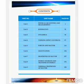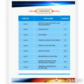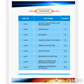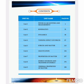Grade 9 Physics has 9 units: Unit 1 Physical Quantities and Measurement, Unit 2 Kinematics, Unit 3 Dynamics, Unit 4 Turning Effect of Forces, Unit 5 Forces and Matter, Unit 6 Gravitation, Unit 7 Properties of Matter, Unit 8 Energy Sources and Transfer of Energy, and Unit 9 Thermal Properties of Matter. In class 8 you have already learnt Units 1, 2, and 3. Today we will start Unit 4: Turning Effect of Forces.